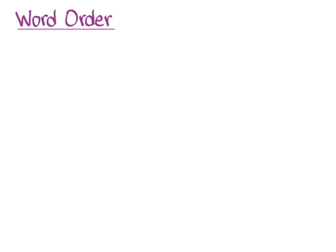The neutral word order in Greek — that is to say, the usual default word order in Greek — is SOV, which is subject, object, verb. That's the neutral. That's what you expect.